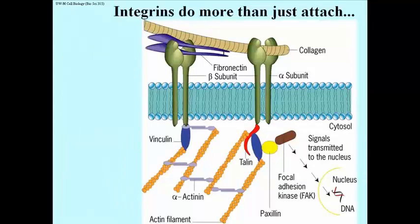A last word about integrins. They are transmembrane proteins that can recognize fibronectin or collagen and even several other molecules. But the cytosolic side has other functions. The cytosolic end of the integrin is articulated with bits of cytoskeleton—here are some actin molecules and other components of the cytoskeleton attached to the integrin.